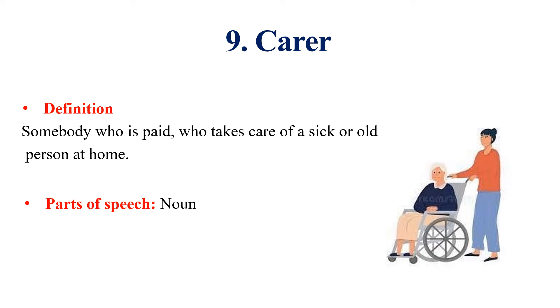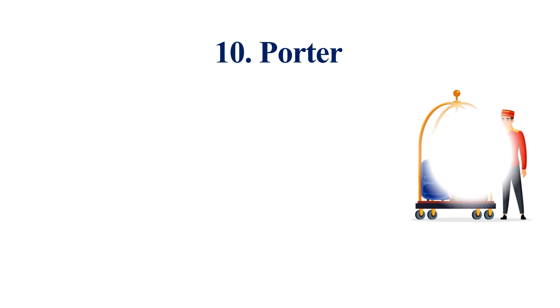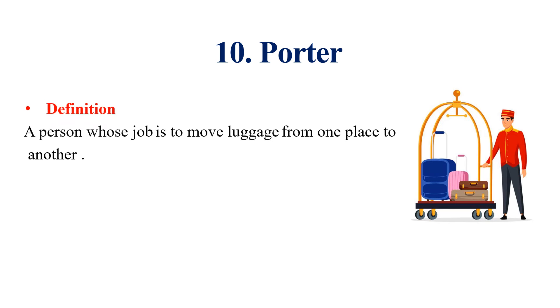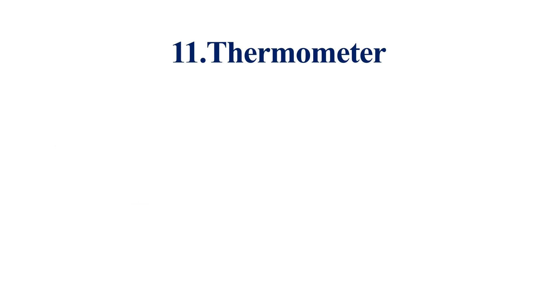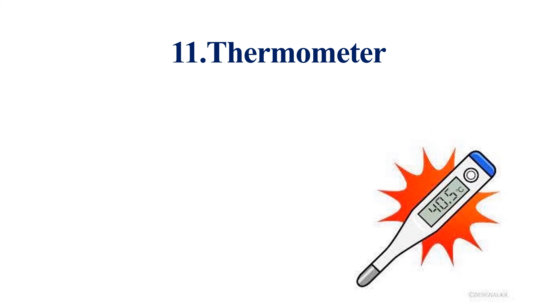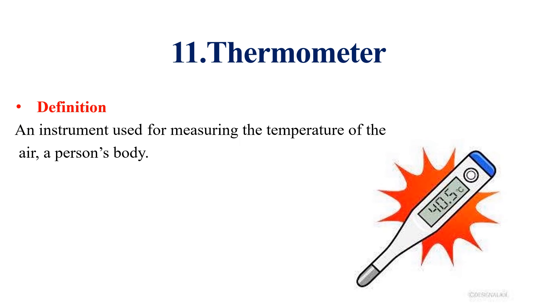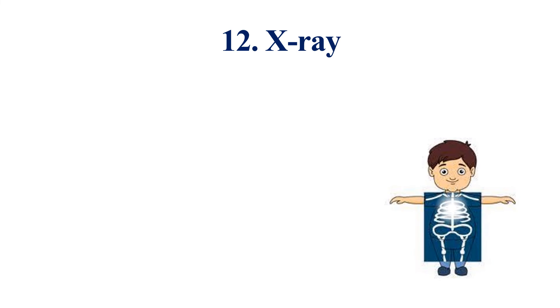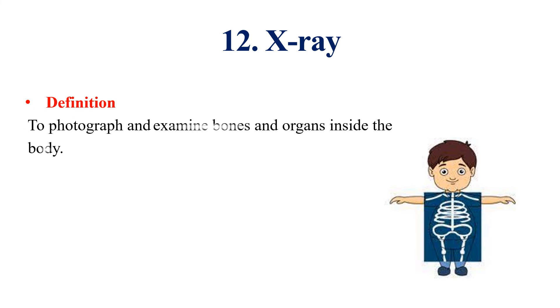Porter: a porter is a person whose job is to move luggage from one place to another. This word is a noun. Thermometer: a thermometer is an instrument used for measuring the temperature of the air or a person's body. This word is a noun. X-ray: to have an x-ray is to photograph and examine bones and organs inside the body. Example: He had to have his chest x-rayed. This word is a noun.